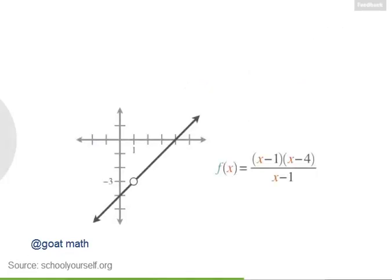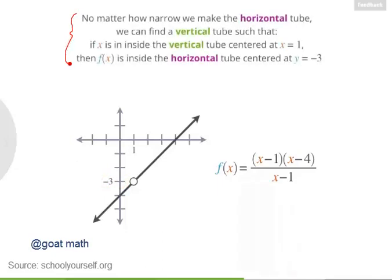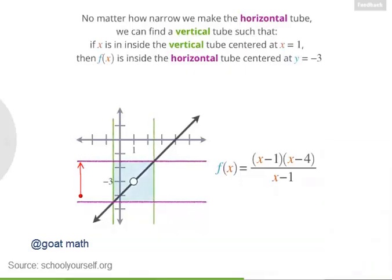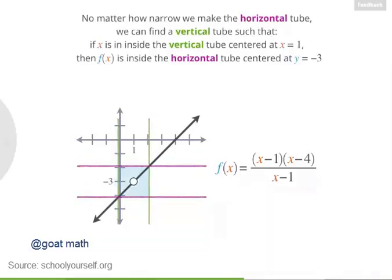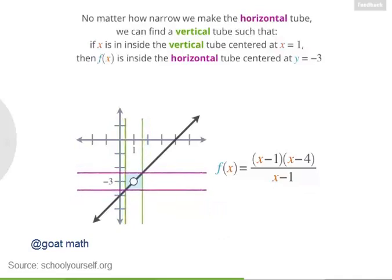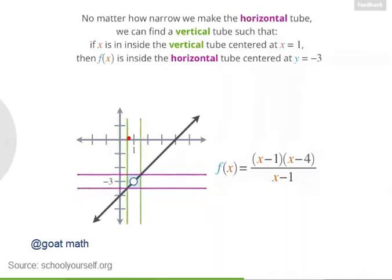So here's our function again. As x gets closer and closer to 1, f gets closer and closer to negative 3. No matter how narrow we make the horizontal tube squeezing it around negative 3, we can always find a vertical tube such that if x is inside the vertical tube, then f of x is inside the horizontal tube, even if this horizontal tube is really, really narrow.